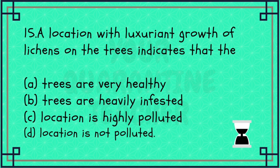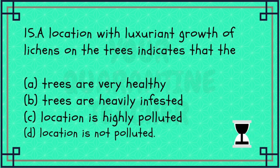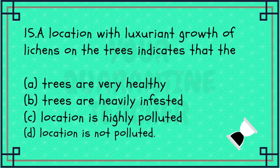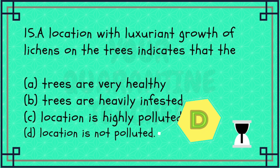A location with luxuriant growth of lichens on the trees indicates that — lichens grow where there is no pollution; they are inversely proportional to pollution. Option A trees are very healthy, Option B trees are heavily infested, Option C location is highly polluted, Option D location is not polluted. Option D is the answer.